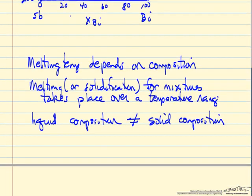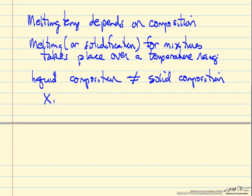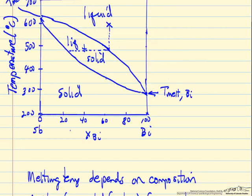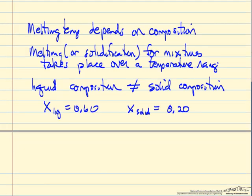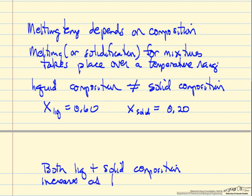For this particular example, the mole fraction of the liquid was 0.6, and then the mole fraction bismuth in the solid is about 0.2, so quite a big difference. Now as we continue to remove energy and form more solid, and we move down along this line for the overall composition, we have this liquid composition and this solid composition. Both liquid and solid compositions increase as the temperature decreases.